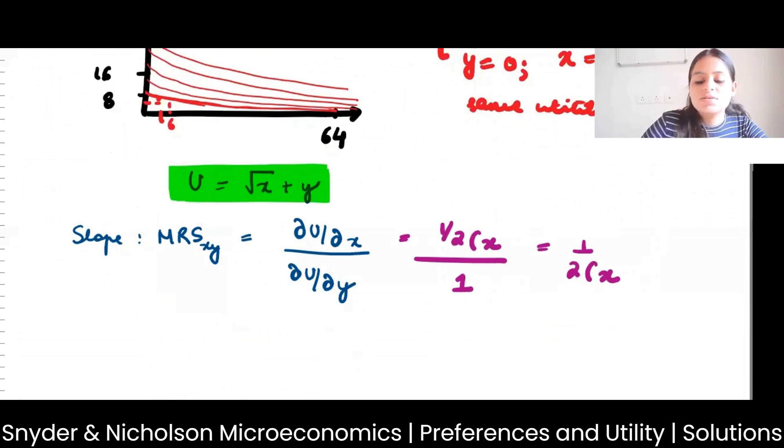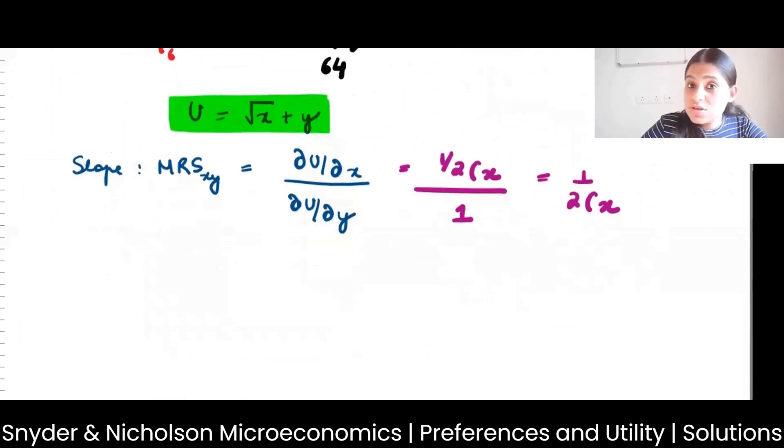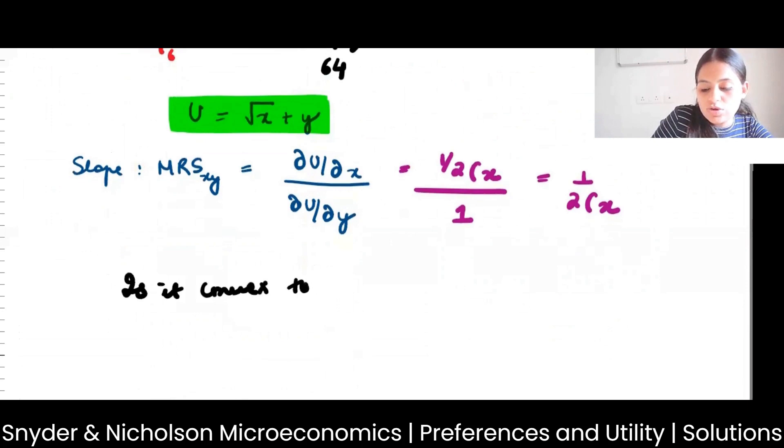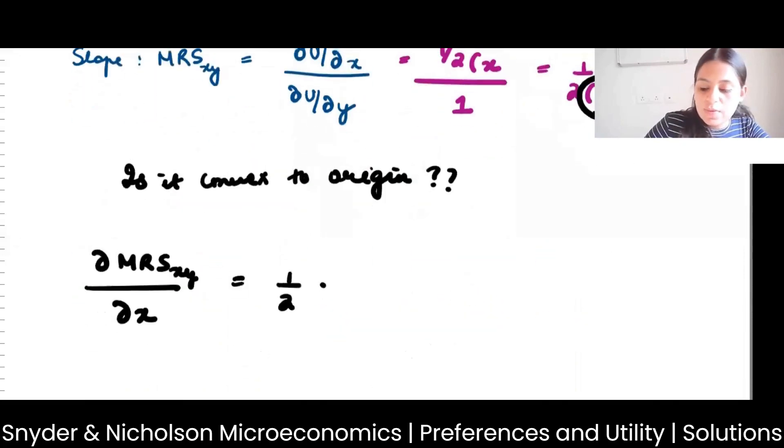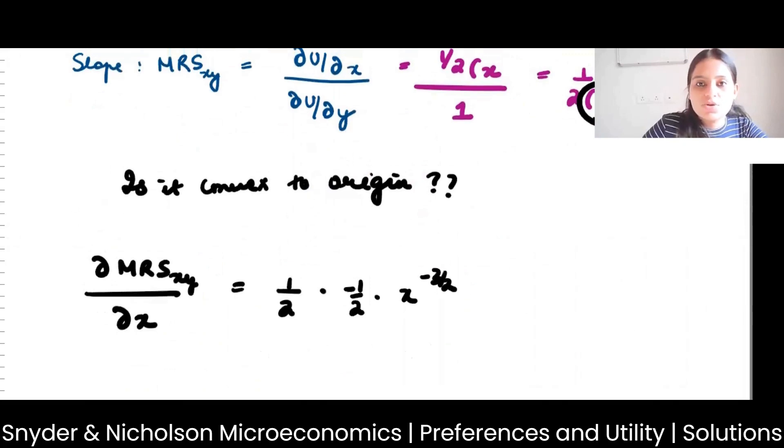1 by 2 root x. The question is the same: is it convex? I told you that it is convex if MRS diminishes. If I have to check what happens to MRS as x changes, what do I get? I have to differentiate with respect to x, so I will get minus 1 by 2 x to the power minus 3 by 2. So this would be minus 1 by 4 x root x. This is less than 0, so my MRS is in fact diminishing.